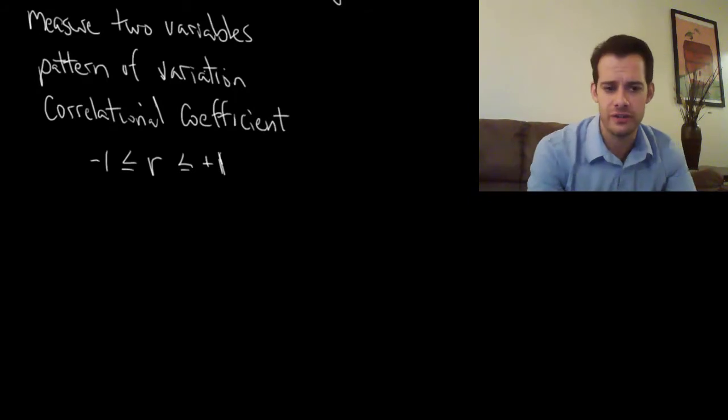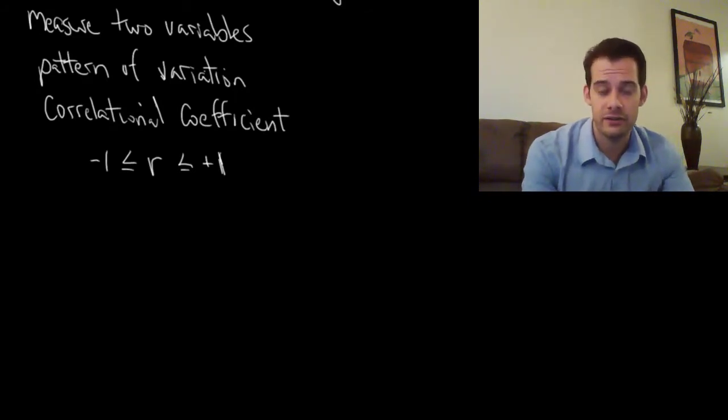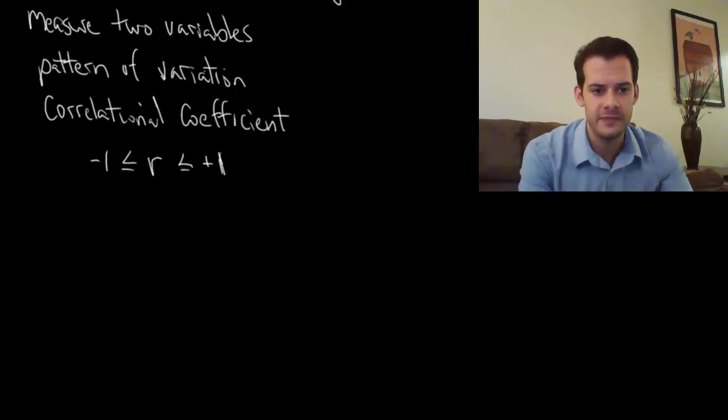The correlational coefficient was invented by Sir Francis Galton who was a statistician and is considered the father of psychometrics which we'll talk about in the section on intelligence and personality. And the calculation of correlation is a little bit complicated so we're not actually going to go through and do this by hand.